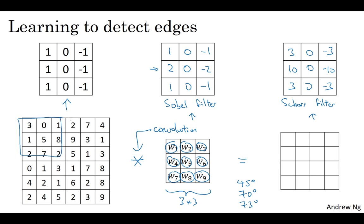This allows backpropagation to learn whatever 3x3 filter it wants, and then to apply it throughout the entire image at this position, at this position, at this position, in order to output whatever feature it's trying to detect - be it vertical edges, or horizontal edges, or edges at some angle, or even some other filter that we might not even have a name for in English.